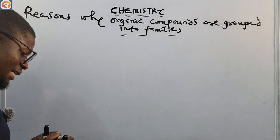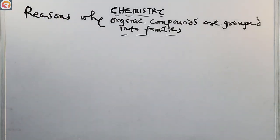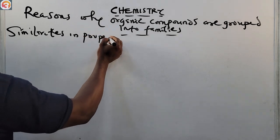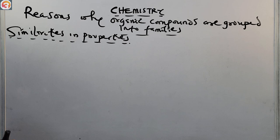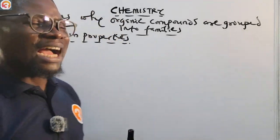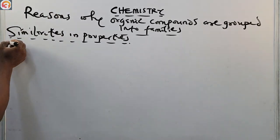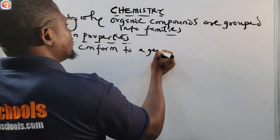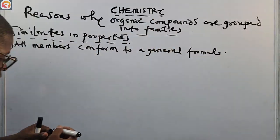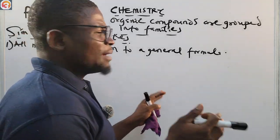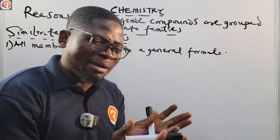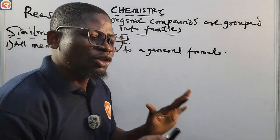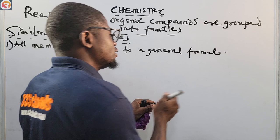Now let us look at the similarities in properties. Number one: all members of a homologous series conform to a general formula. The various molecular formulas of compounds in a particular family can all be found using the general formula for that family. For example, the general formula for alkanes is CnH2n+2.